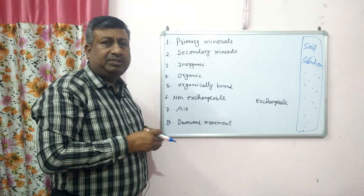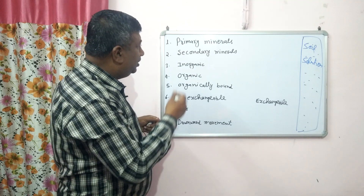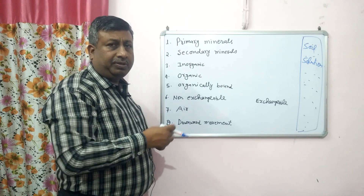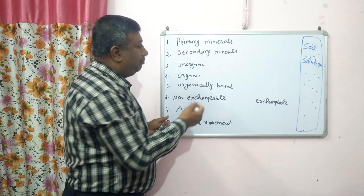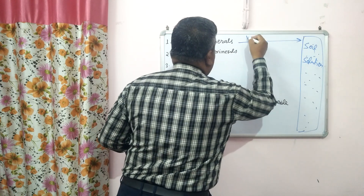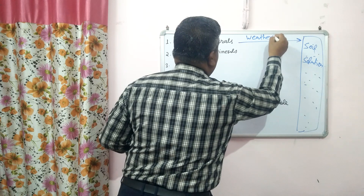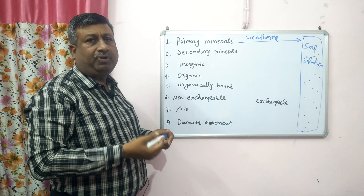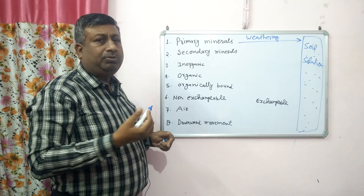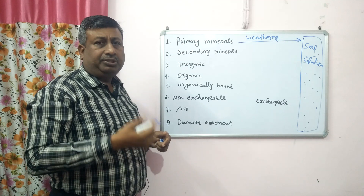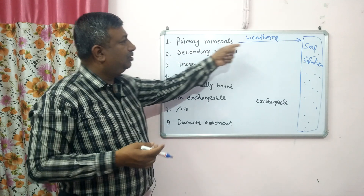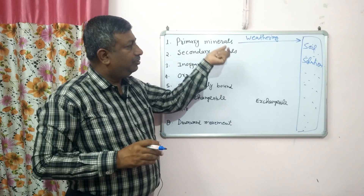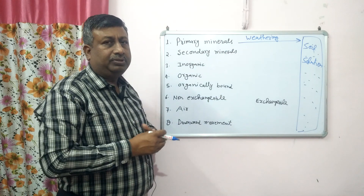These are generally reversible processes. If there are primary minerals, primary minerals contribute nutrients into the soil solution by the process of weathering. The first process is weathering, which contributes nutrients into the soil solution. For example, apatite is a good example of a phosphatic mineral which contributes phosphorus through weathering. This is not a reversible process — primary minerals undergo weathering and the nutrients released come into soil solution.